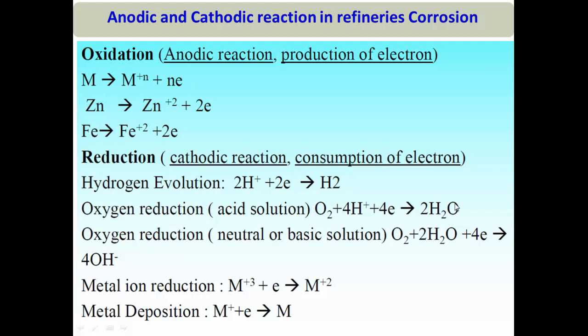Anodic and cathodic reactions are mutually dependent. If you consume more electrons (at the cathode), iron is forced to produce more electrons — the anodic rate increases and corrosion accelerates. For example, a material under aerated HCl solution corrodes faster than under deaerated HCl, because two cathodic reactions occur simultaneously in aerated conditions, driving higher electron consumption.